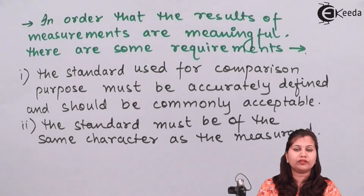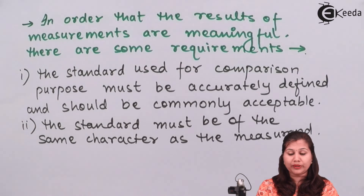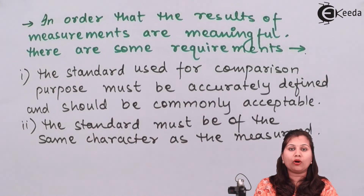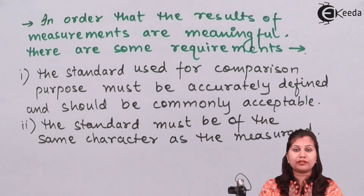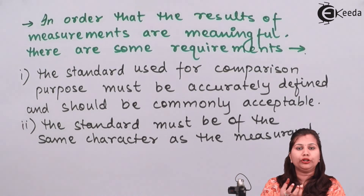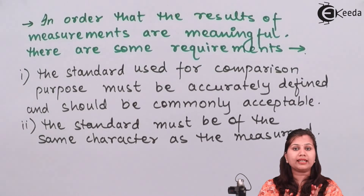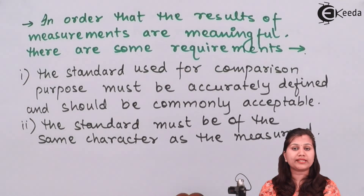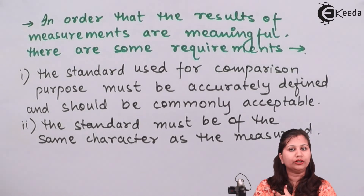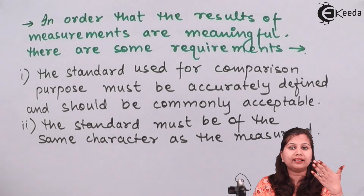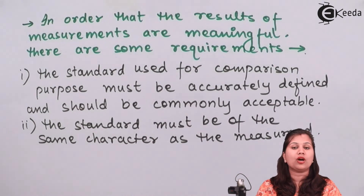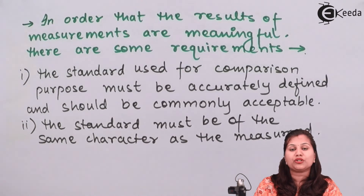In this video we studied what measurement is. In simple terms, measurement tells us about the property of something and gives a meaningful number to a quantity or physical parameter. In engineering terms, measurement is the result of a quantitative comparison between an unknown quantity (the measurand) and a known quantity (the standard). We also studied the three requirements essential for getting a meaningful result. I hope this topic is clear to you. Thank you.